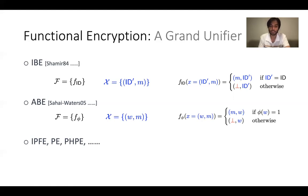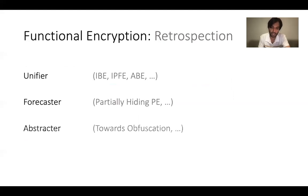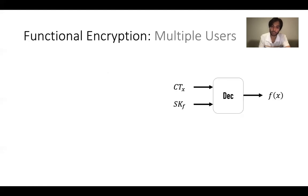Since its formalization over a decade ago, FE has turned out to be a very meaningful and powerful cryptographic concept. It unified all existing encryption functionalities at that time and helped in predicting new concepts. It also served as the right abstraction to study relationships between numerous cryptographic objects, including program obfuscation, and has been further generalized to many more general multi-user models.